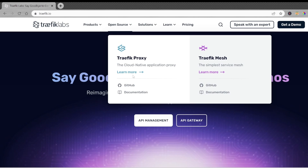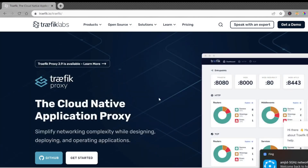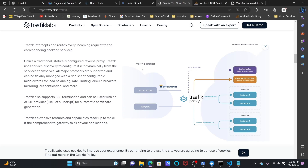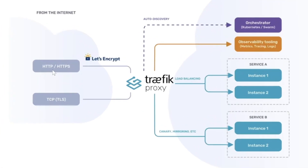If I click on Traefik Proxy learn more, you will see the details here. You can see the infrastructure — the front end is the internet whether it is HTTP, HTTPS, or even TCP or TLS. It will use Let's Encrypt SSL certificates for your traffic, then using Traefik Proxy auto-discover the orchestrator, observability tooling like metrics, tracing, logs, and of course load balancing if you have multiple instances of the same application.